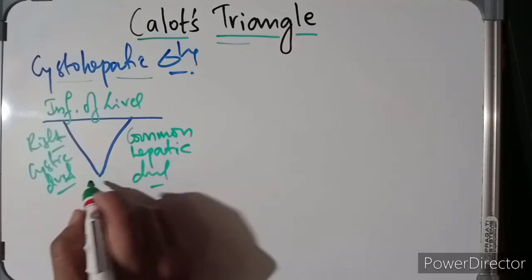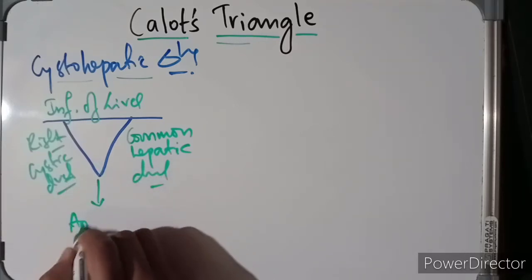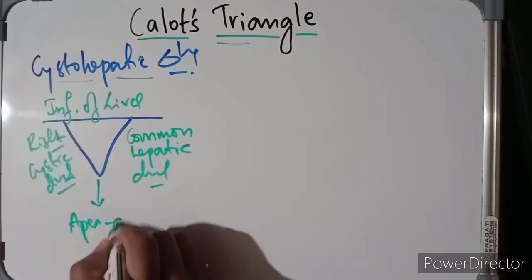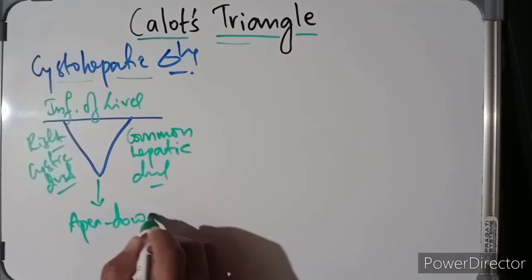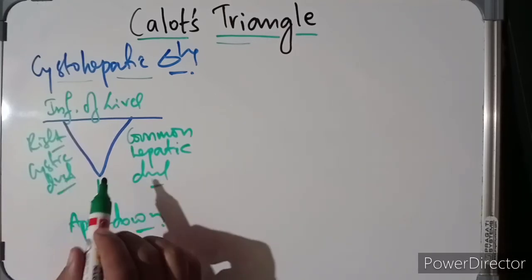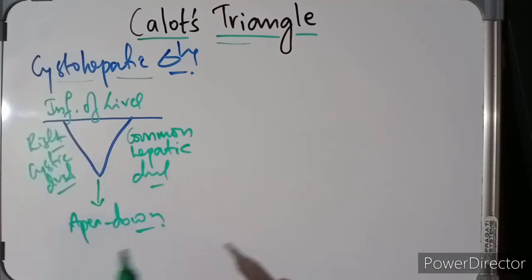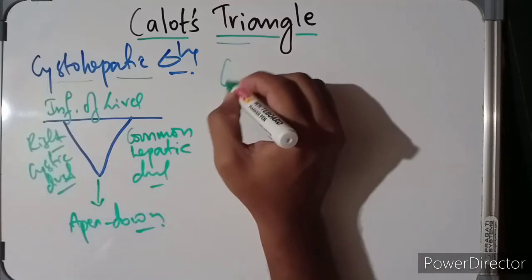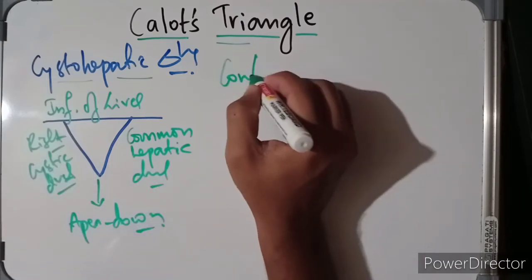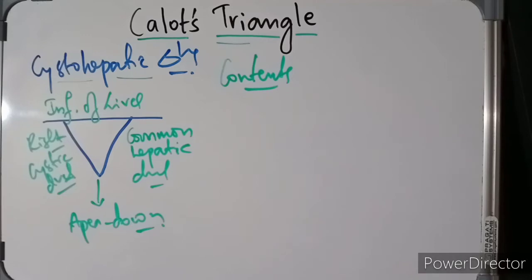The apex of the triangle faces downwards, between the cystic duct and the common hepatic duct. Now, what are the contents of the Calot's triangle?